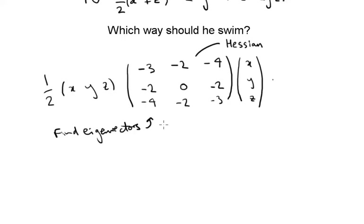So he should swim in the direction of biggest negative eigenvalue.